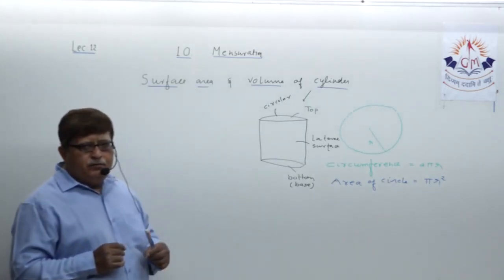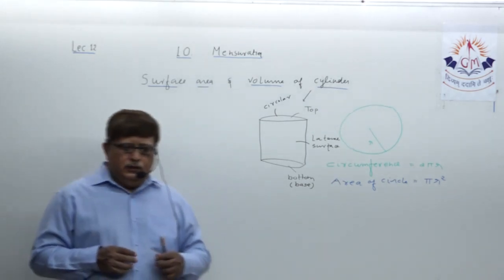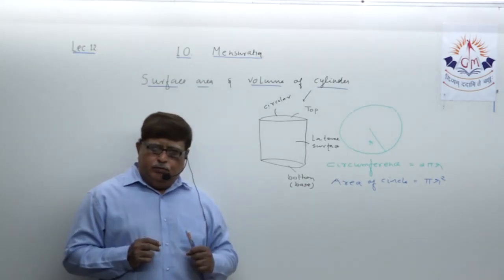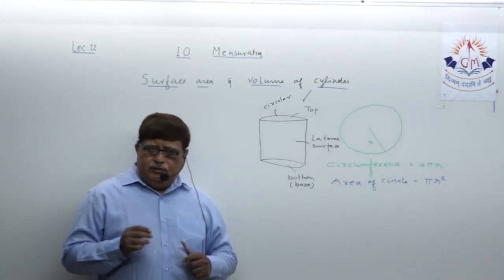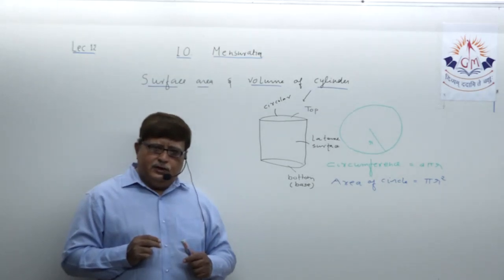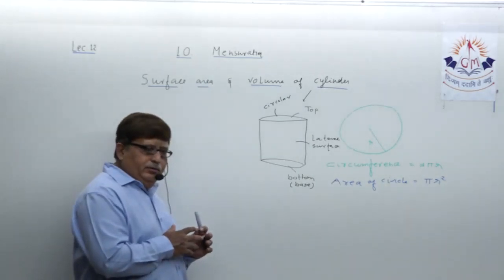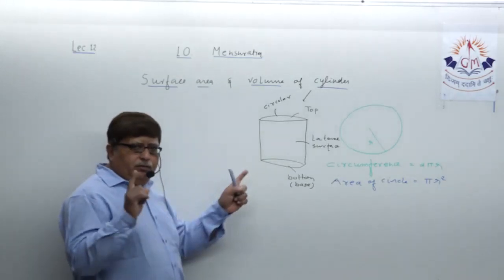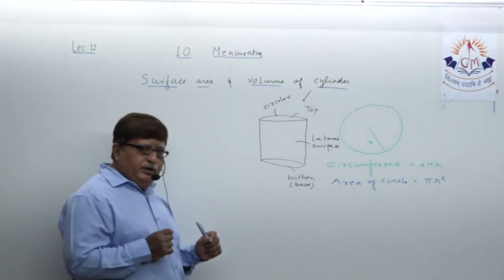Today, first we are trying to understand how to derive the formula for lateral surface area of cylinder. The formula is directly available: lateral surface area equals 2πrh. But you need to really understand how the formula actually came. We are talking of a hollow cylinder — nothing inside, not a solid cylinder.